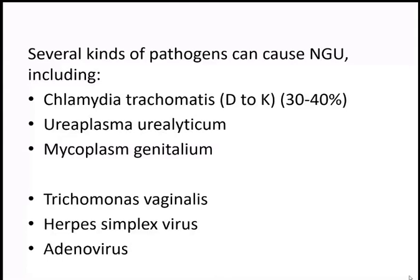In neonates born from an infected mother, chlamydia trachomatis can produce ophthalmia neonatorum. Other common bacterial causes include Ureaplasma urealyticum and Mycoplasma genitalium. Additional causes include Trichomonas vaginalis as a parasitic cause, and viral causes such as Herpes simplex virus and adenovirus.